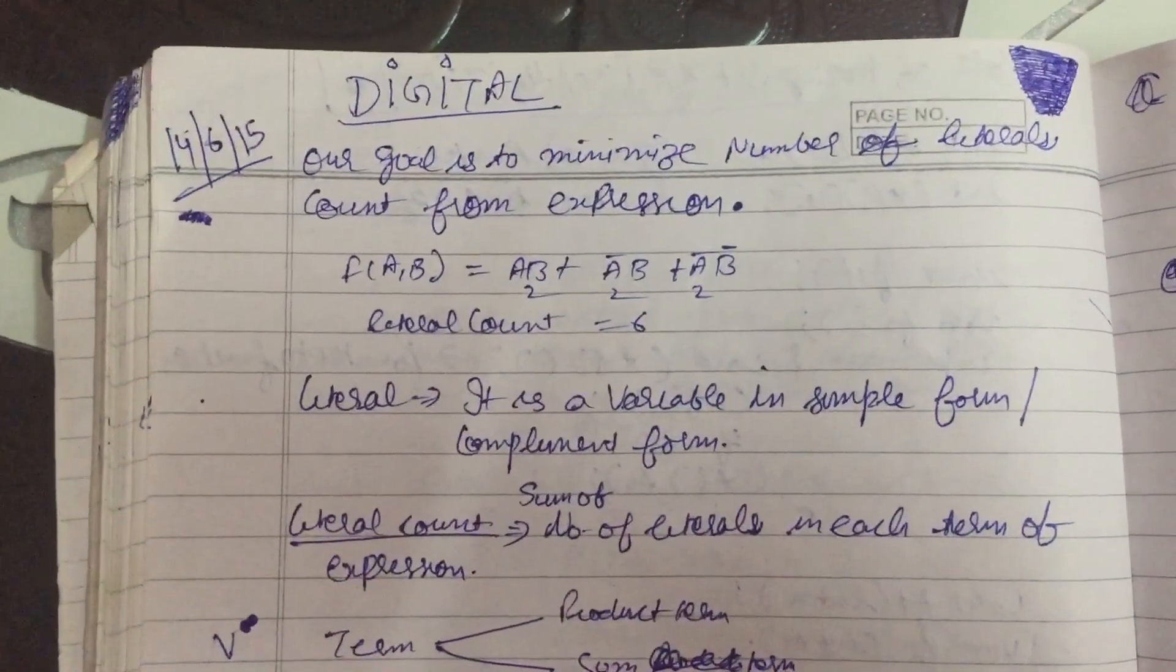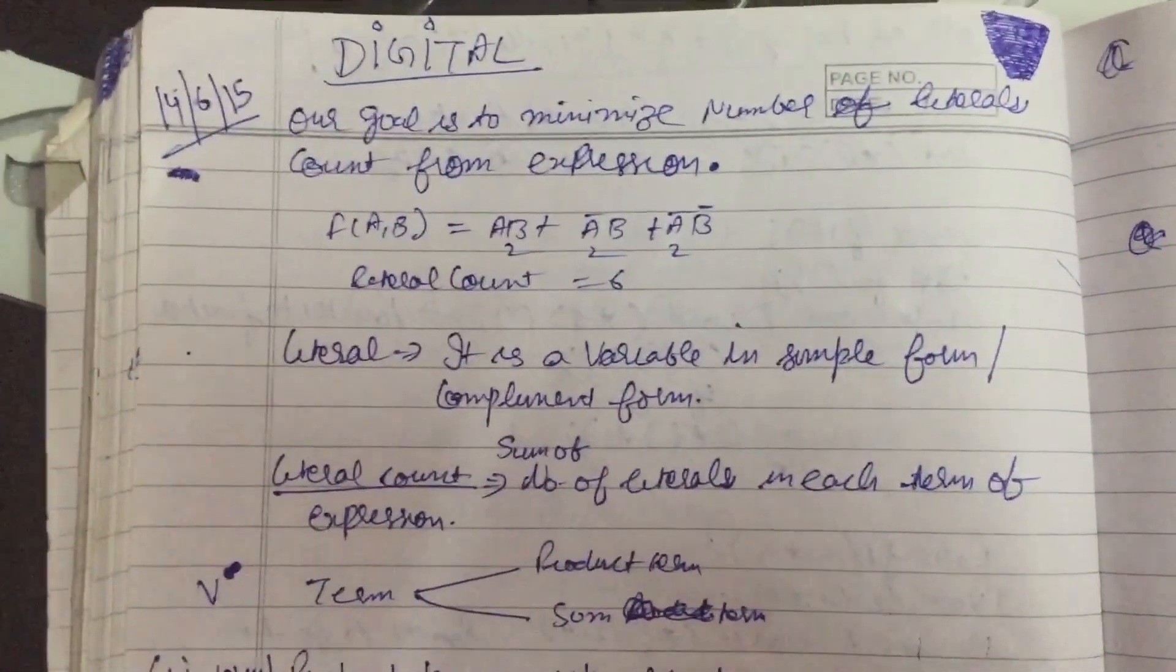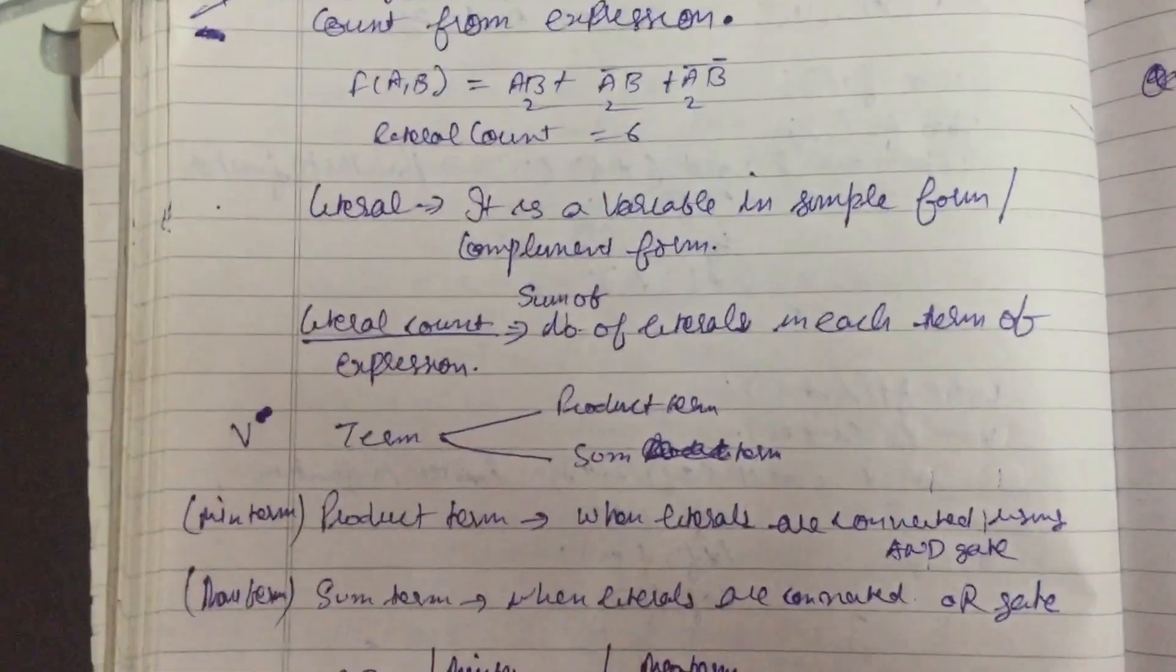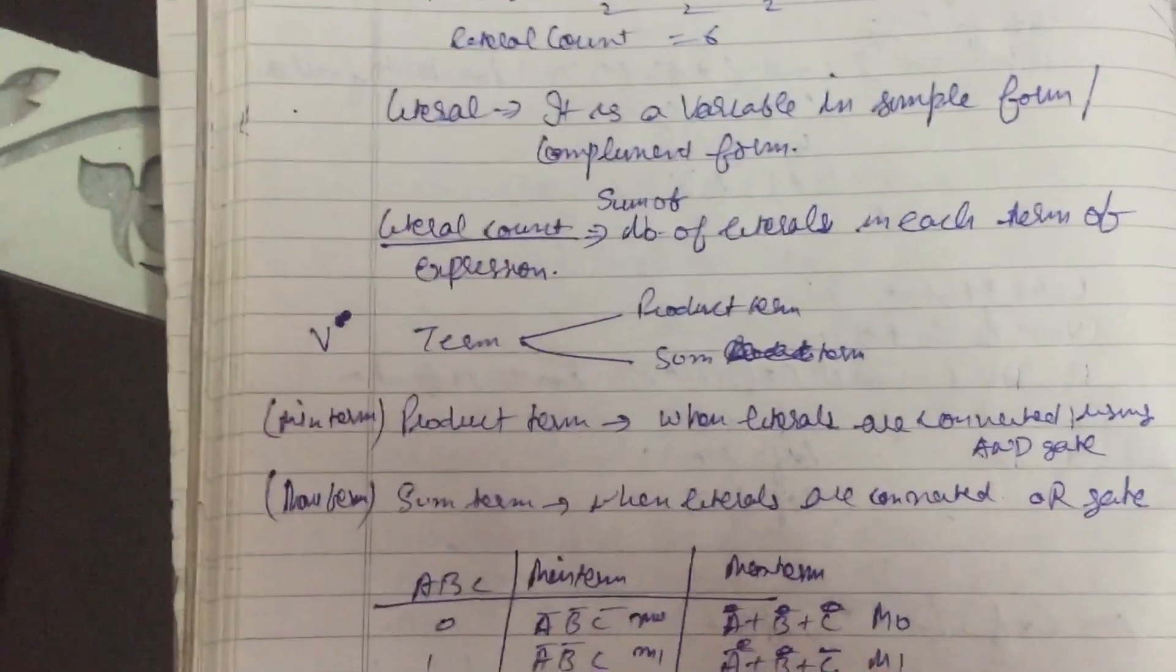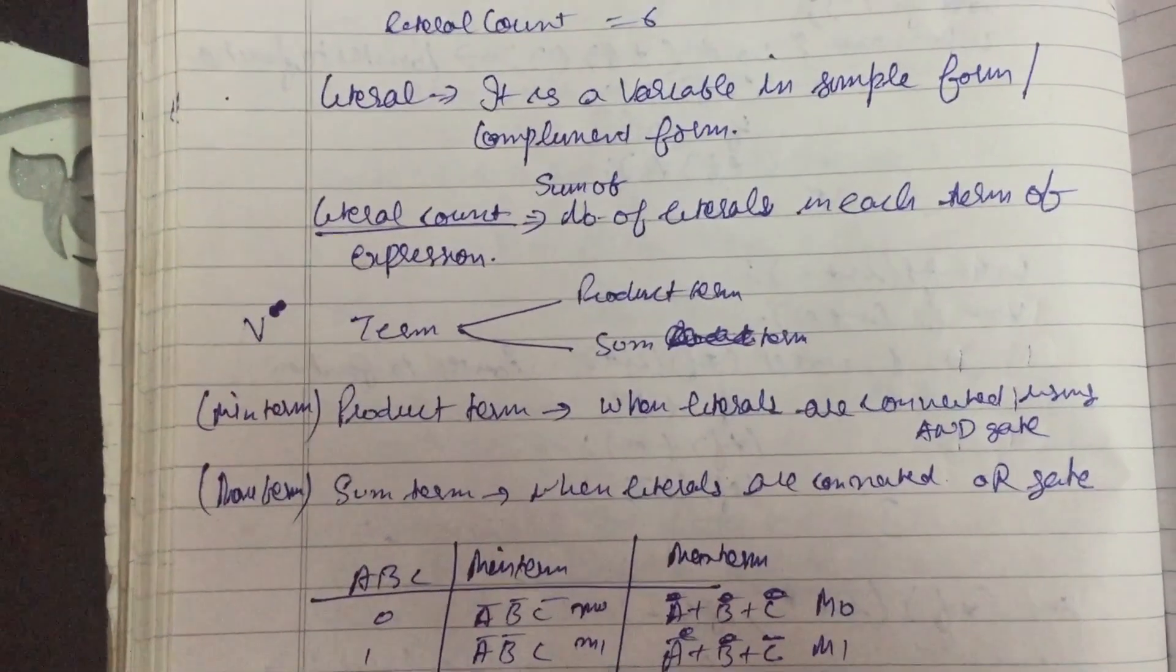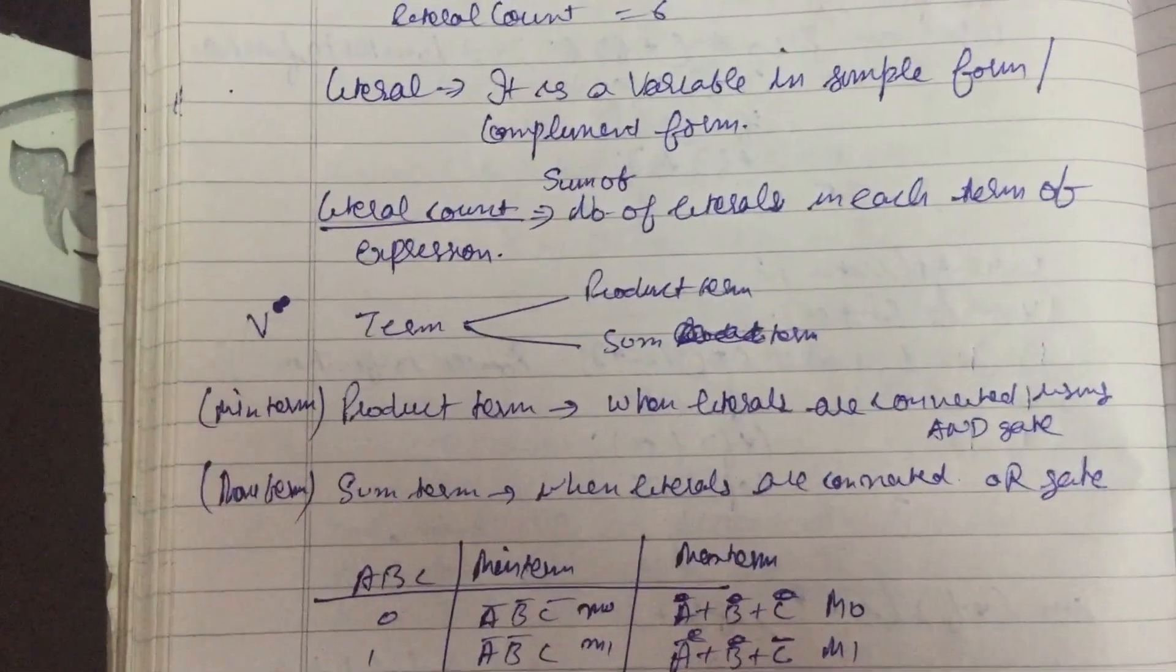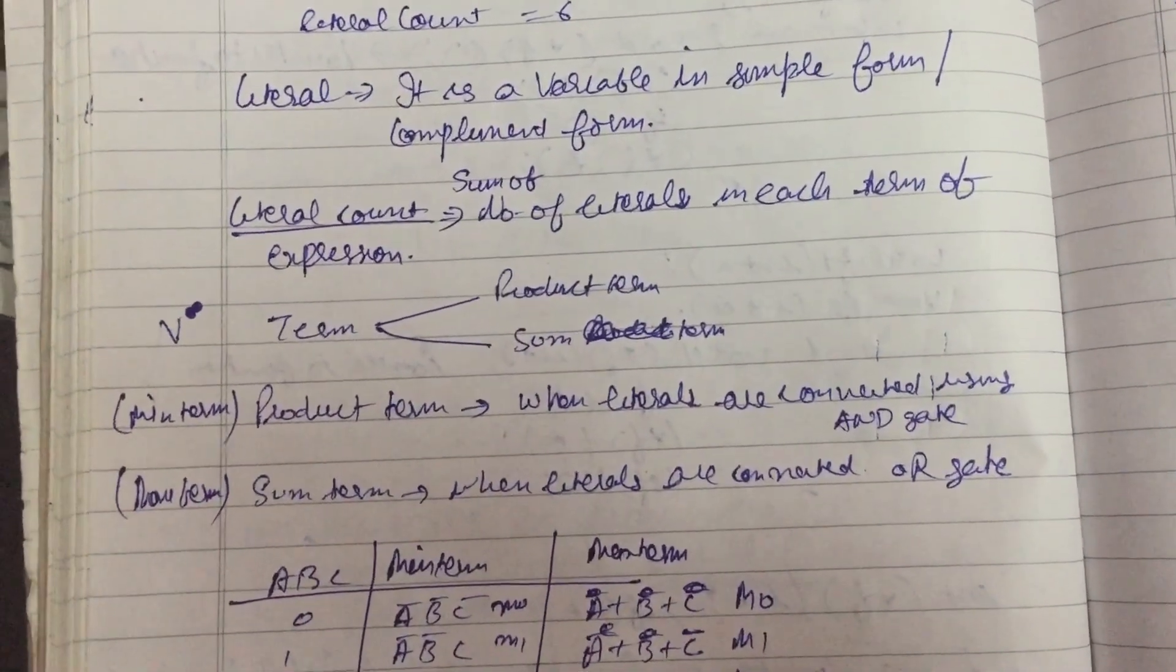We have to minimize it from an expression, that's why we are using K-map. So there are two types of terms which is called product term and sum term. Min term is also called product term. On the other hand, the max term is also called sum term.